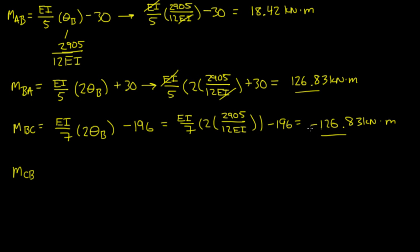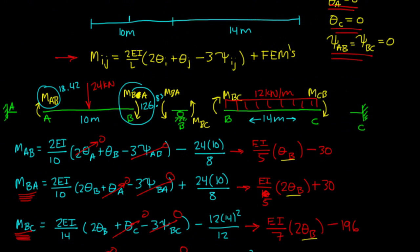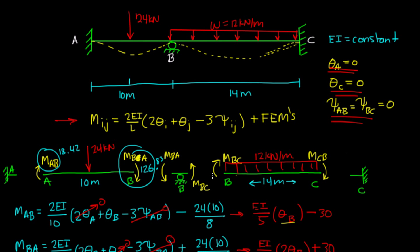M_CB. Oh, and since this is negative, all that means is that we drew M_BC clockwise here, but really, since it's negative, it's actually going the other way. So the arrow's not going this way, it's going this way, right?